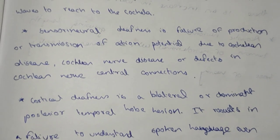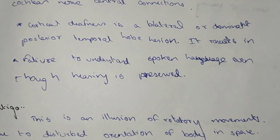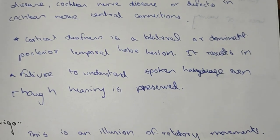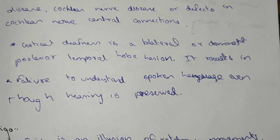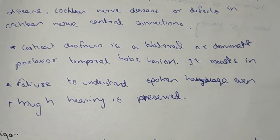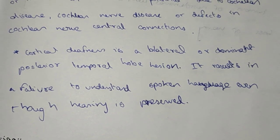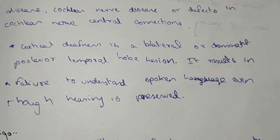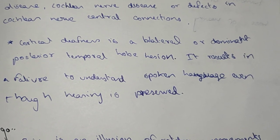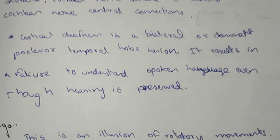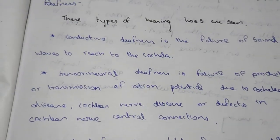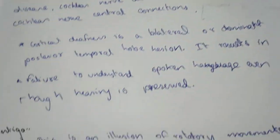Cochlear nerve disease is also caused due to defects in the central connections. Cortical deafness is due to bilateral or dominant posterior temporal lobe lesion, which results in the failure to understand spoken language even though hearing is preserved. The patient can hear but does not understand spoken language due to the lesion in the temporal region. These are the types of deafness and hearing loss.